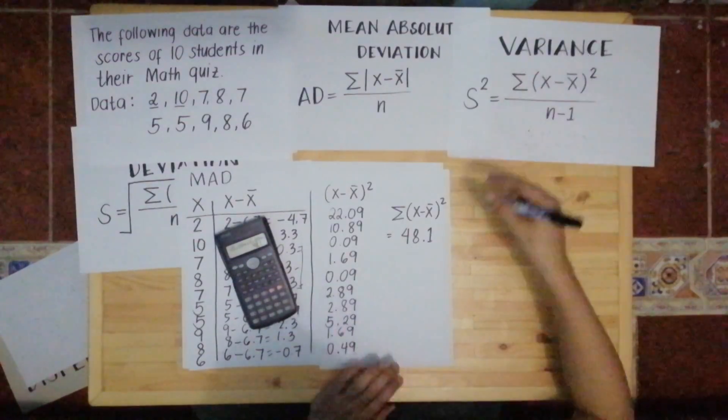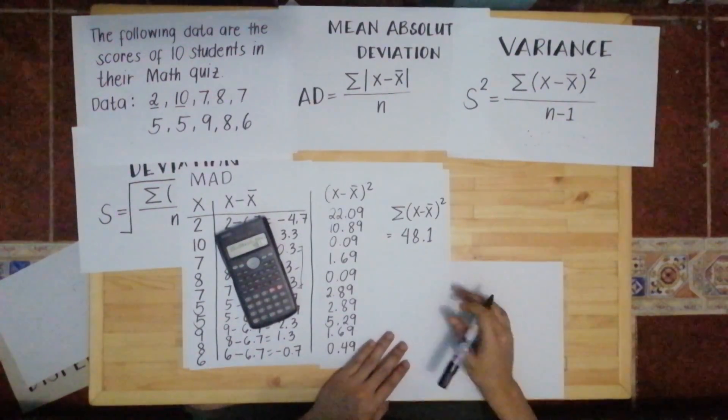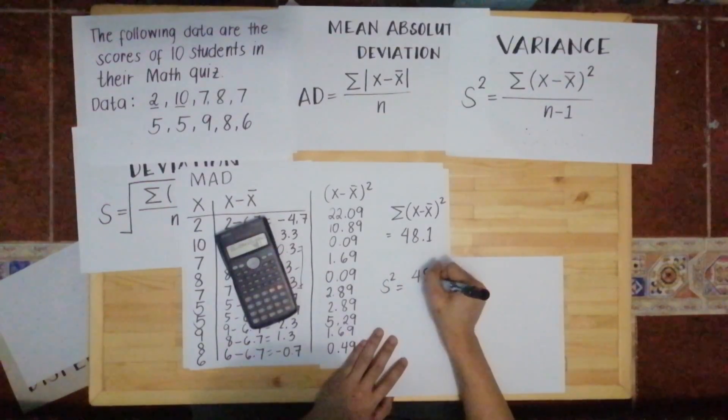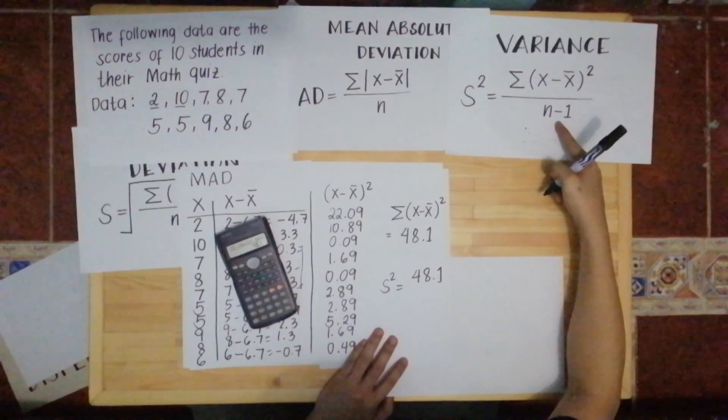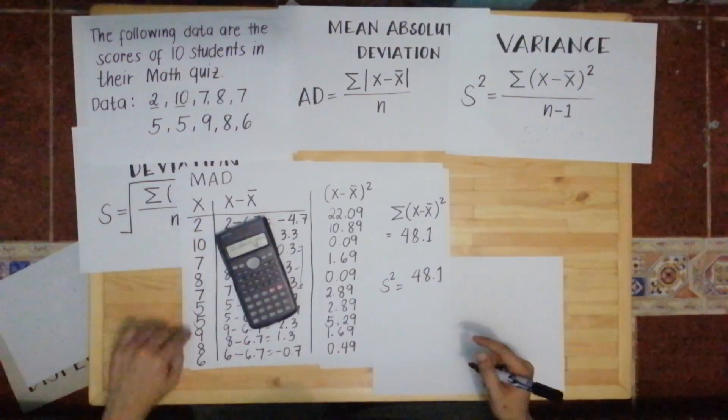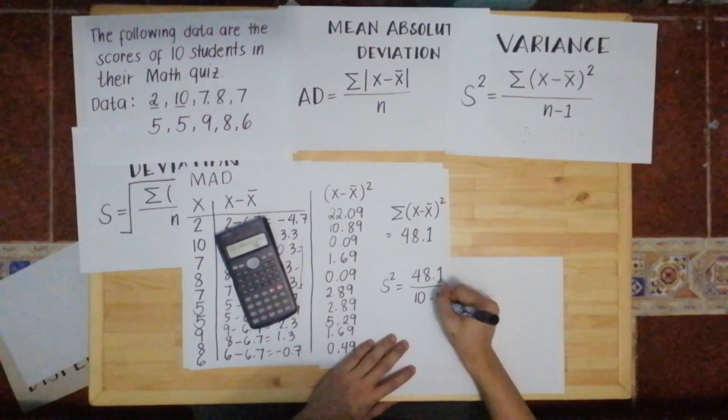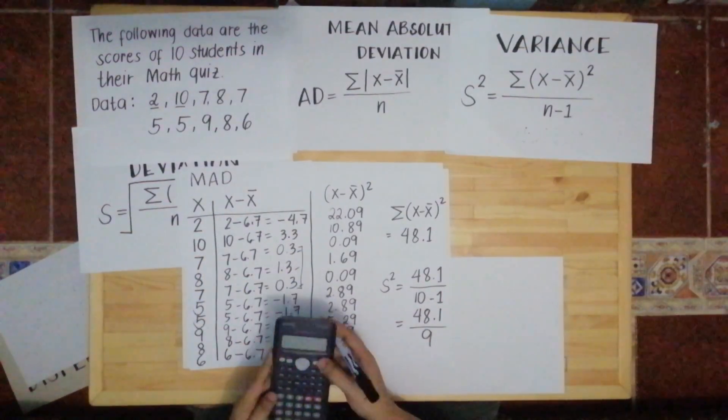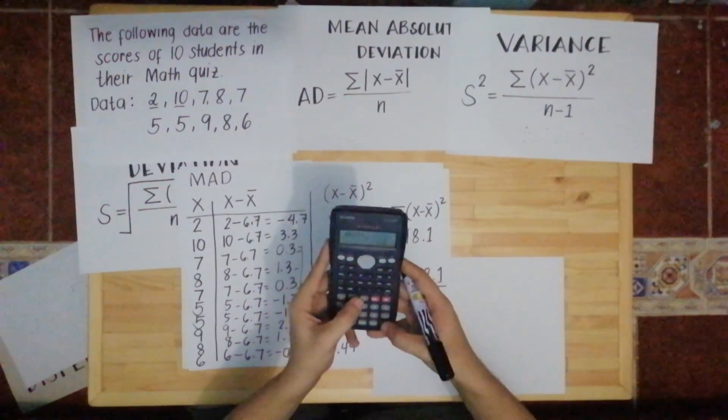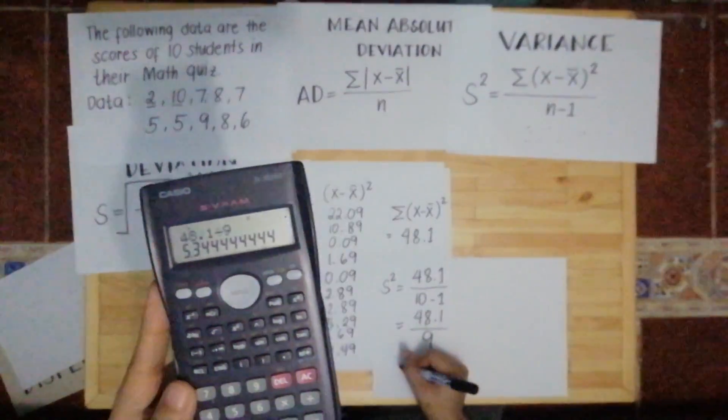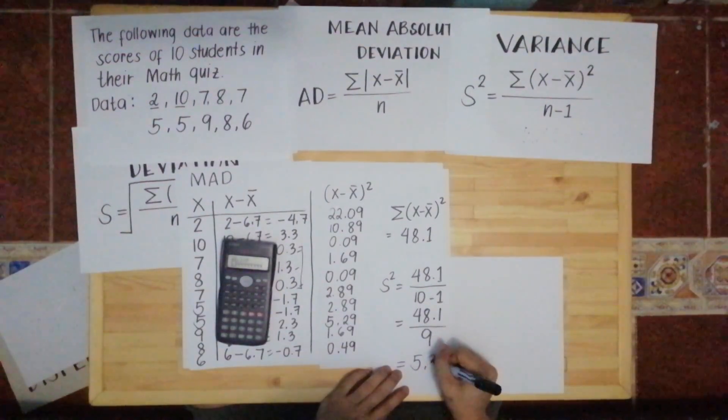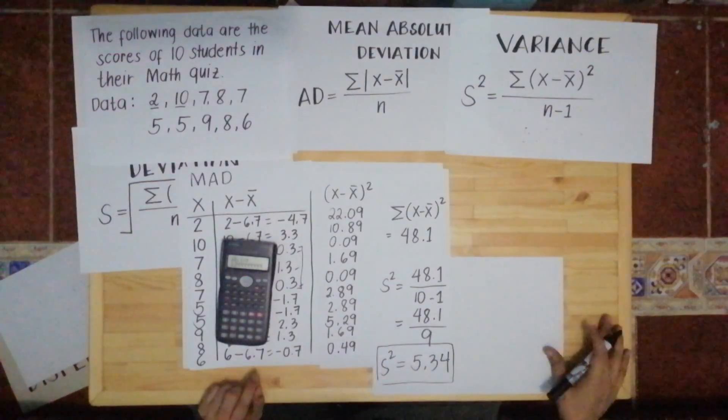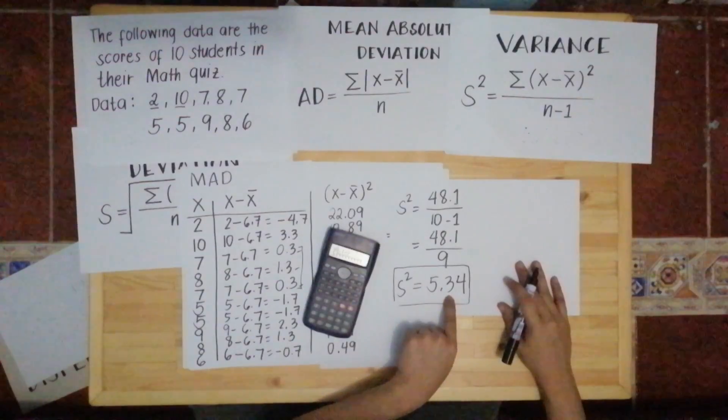Is this the final answer for the variance? Not yet, because we have a formula. Let's use the formula. It says summation of X minus mean squared—that's 48.1. So the variance is equal to 48.1 divided by N minus 1. Since our N is 10, we write 10 minus 1. That's 48.1 divided by 10 minus 1, which equals 9. So we divide the two: 48.1 divided by 9. The answer is 5.34. So this is now the variance. The variance of the given data is 5.34.